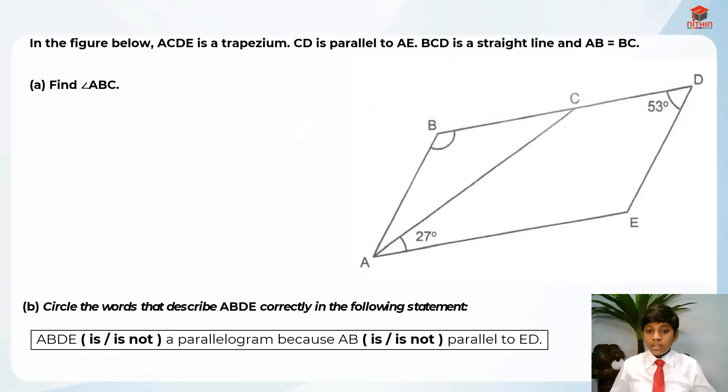So here is the question. This question is testing us on angles. Let's read the question first for part A. In the figure below, ACDE is a trapezium, CD is parallel to AE, BCD is a straight line and AB equals to BC. Part A, find angle ABC.